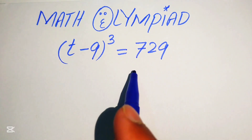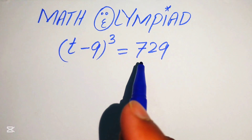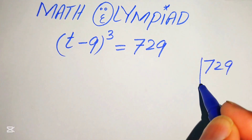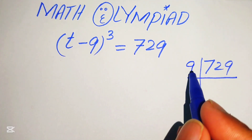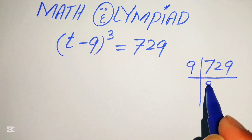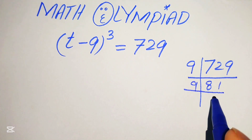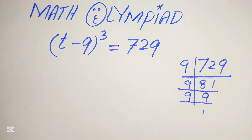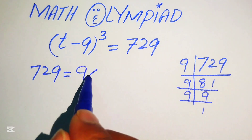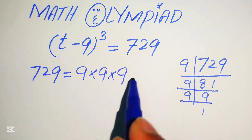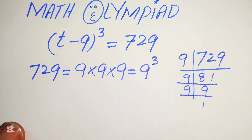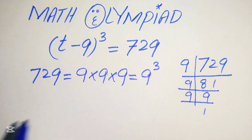First we need to focus on the right hand side where we have 729. We find the prime factors of 729: dividing 729 by 9 gives 81, and 81 divided by 9 gives 9, so 729 equals 9 multiplied by 9 multiplied by 9, which means 729 equals 9 cubed.